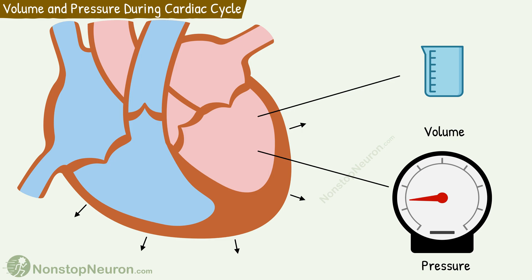This completes the entire cycle. Now the atrioventricular valves open and the cycle is repeated. This is how volume and pressure change during a cardiac cycle.